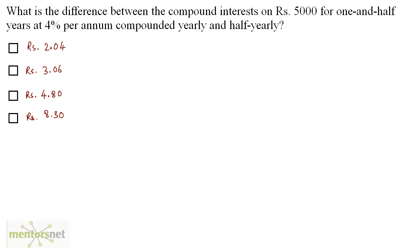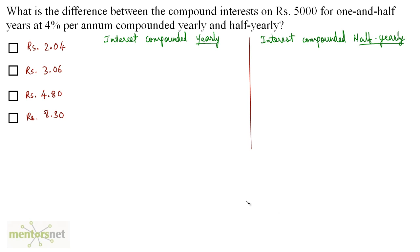What is the difference between the compound interest on Rs. 5000 for 1.5 years at 4% per annum compounded yearly and half-yearly? We have two cases. For interest compounded yearly, the formula is A = P × (1 + R/100)^N, with P = 5000, R = 4, N = 1.5.